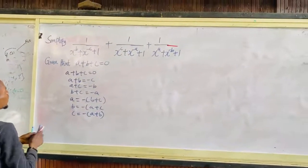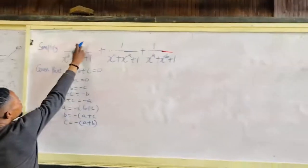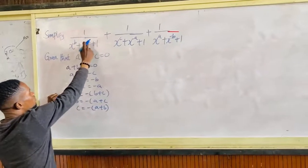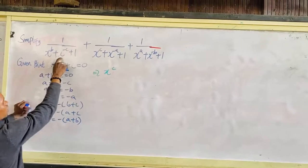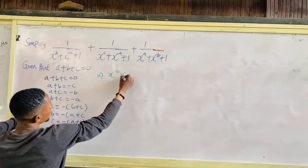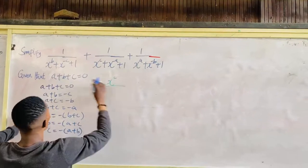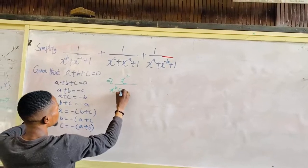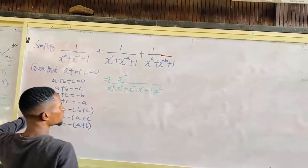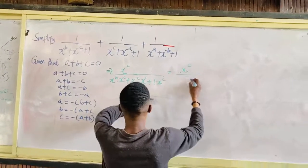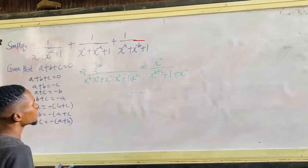From the first fraction, 1 over x to the power b plus x to the power minus c plus 1, if I multiply the numerator and denominator by x to the power c, that gives x to the power c all over x to the power b times x to the power c plus x to the power minus c times x to the power c plus 1 times x to the power c. Which gives x to the power c all over x to the power b plus c plus 1 plus x to the power c, because x to the power minus c times x to the power c is 1.